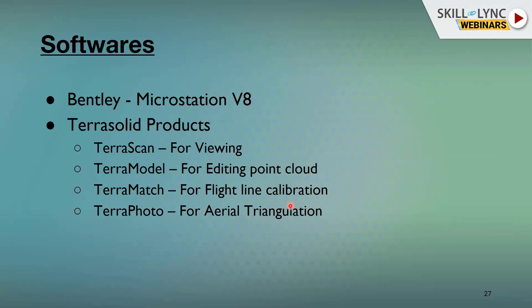TerraPhoto is used for aerial triangulation. When the aircraft captures aerial images, there can be deviations of around 50 centimeters to 1 meter. TerraPhoto allows you to correct those images, perform camera calibration, and generate orthorectified images with precise ground truth information.